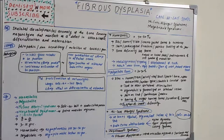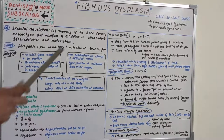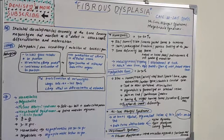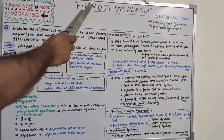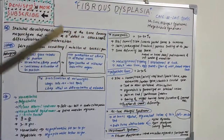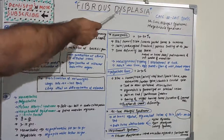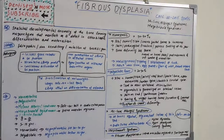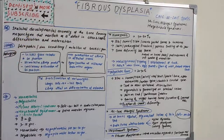Hello everyone, welcome back to another session on Dentistry and More. Today we have a bone disease: fibrous dysplasia. Last session we covered Paget's disease, in which bone remodeling, resorption, and formation are affected. In fibrous dysplasia, fibrous tissue develops in place of normal bone — it is the abnormal formation of fibrous tissue causing weakening, deformity, or fracture of the affected bone.